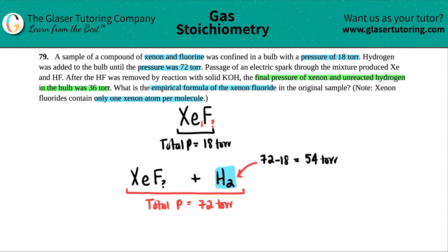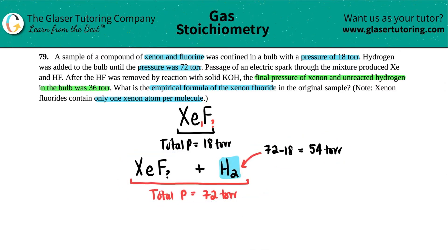I'm just seeing the pieces I can put together here. Now they said passage of the electric spark through the mixture produced Xe and HF. After the HF was removed by reaction with solid KOH, the final pressure of xenon and unreacted hydrogen in the bulb was 36 torr. So now we have xenon plus H2 unreacted. The total pressure here was 36 torr.